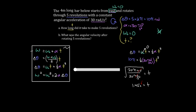Part b asks: what was the angular velocity after rotating five revolutions? Since we now know the time, we know every variable except omega-final, so we can use any formula. The first one is simplest — no squares or ratios. Omega-final equals omega-initial plus alpha times t: that's zero plus 30 times 1.45 seconds, giving a final angular velocity of 43.5 radians per second. That's how fast the bar was rotating at the moment it completed five revolutions.